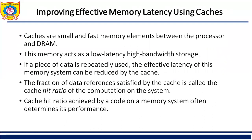How can we improve memory performance related to latency? By improving effective memory latency using cache. Caches are small, fast memory elements between the processor and DRAM, acting as low-latency, high-bandwidth storage. If a piece of data is repeatedly used, the effective latency of the memory system can be reduced via cache. The fraction of data references satisfied by the cache is called the cache hit ratio, which often determines the performance of the system.